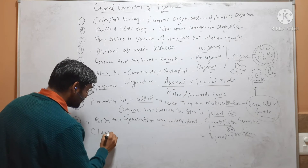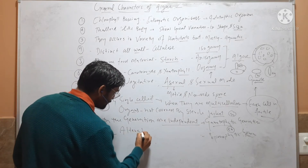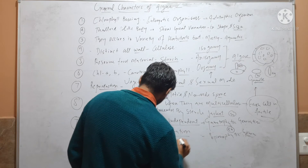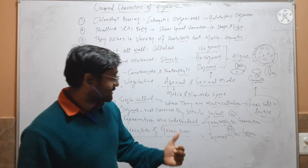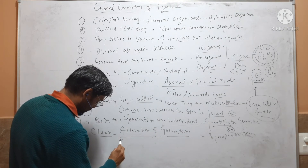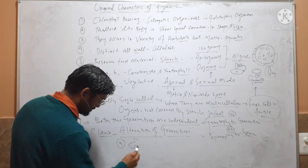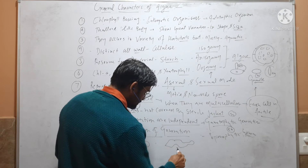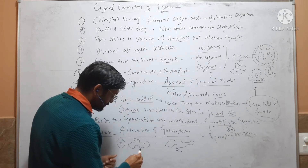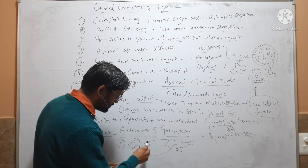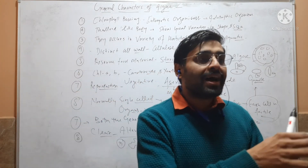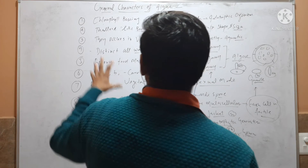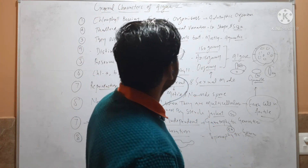Tenth, algae show clear alternation of generations. You will find a haploid plant body (gametophyte) and a diploid plant body (sporophyte) of the same species alternating — first gametophyte, then sporophyte, then gametophyte again.